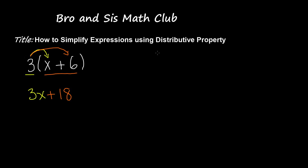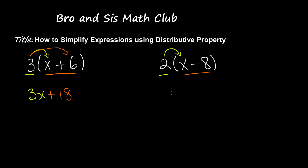Another example of an expression is 2 times x minus 8. The single term outside the set of parentheses is 2, and the two terms inside are x and negative 8. I'm going to use distributive property and distribute 2 to x first — 2 times x is 2x. Now I'll distribute 2 to negative 8: 2 times negative 8 gives us negative 16. So 2x minus 16 is our answer.